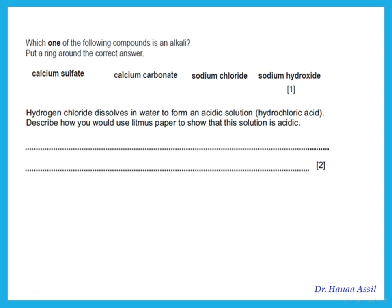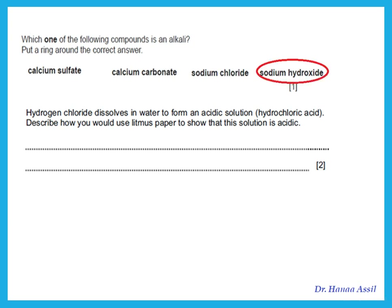Which one of the following is an alkali? Alkali means a base that dissolves in water. You know something is a base if it is an oxide or hydroxide of a metal. So sodium hydroxide is an alkali.